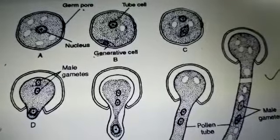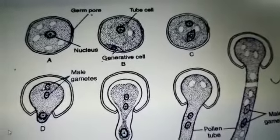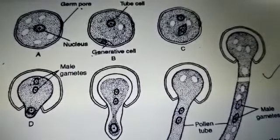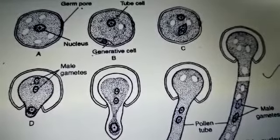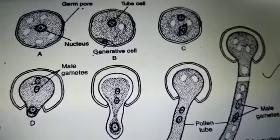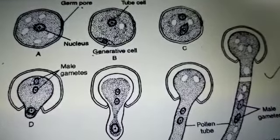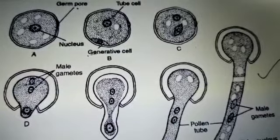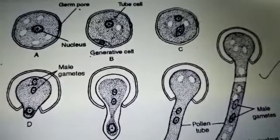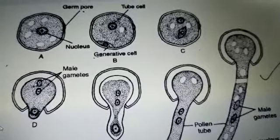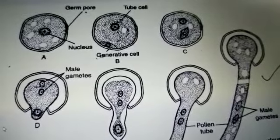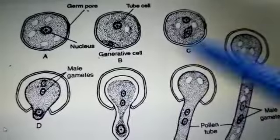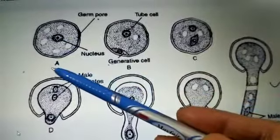Today we are going to discuss micro gametogenesis. It is the formation of micro gametes or male gametes from a micro spore or pollen grain. It is always developed after the formation of micro spore through microsporogenesis, or formation of micro spores.